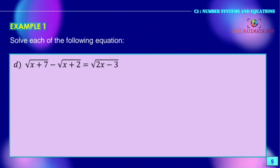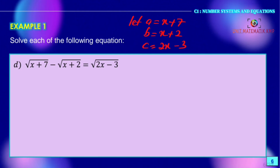For Example 1d, we are given √(x + 7) − √(x + 2) = √(2x − 3). This equation is more complicated, so we substitute variables. Let A = x + 7, B = x + 2, and C = 2x − 3. We rewrite the equation in terms of A, B, and C: √A − √B = √C, which gives √A = √B + √C.